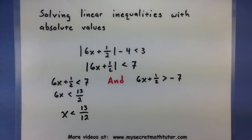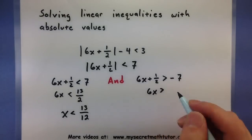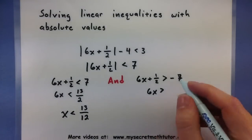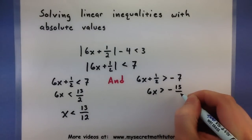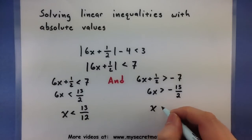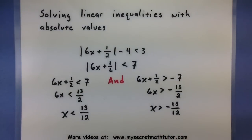This one, if I subtract a half, then I'm at negative 7 and 1 half. So that's negative 15 halves. Okay. We'll take this one divided by 6. So x is greater than a negative 15 twelfths. Alright, here's where that AND comes into play.